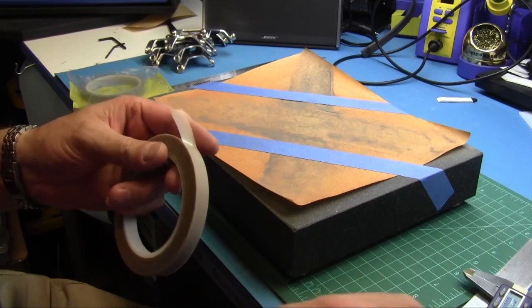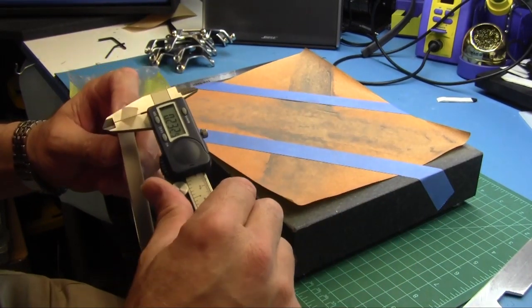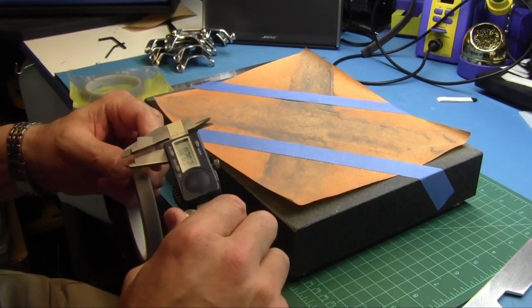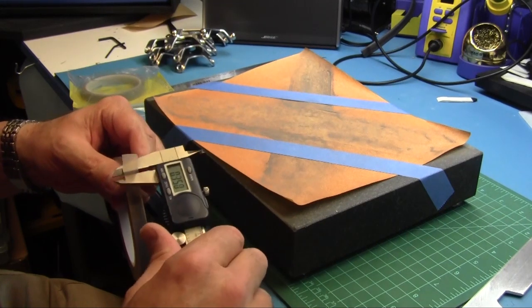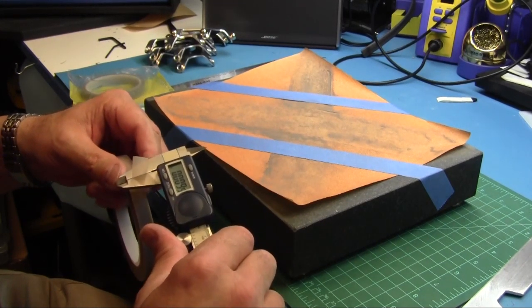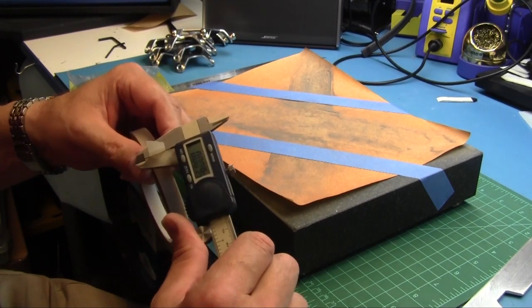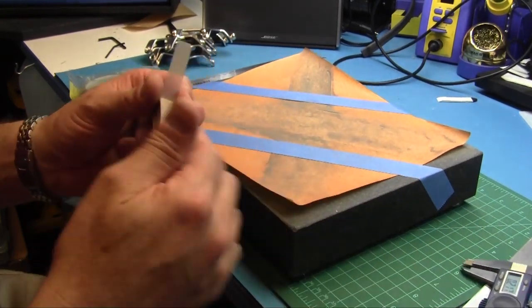So here I've got some Teflon tape. This stuff is about ten thousandths or so. It's about nine thousandths, ten thousandths I think is what it was. It came from McMaster-Carr.